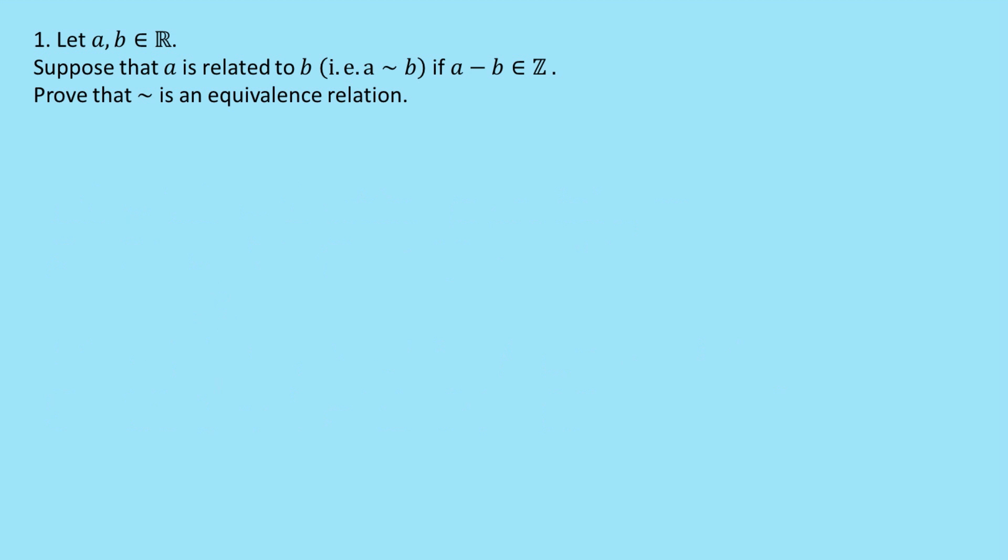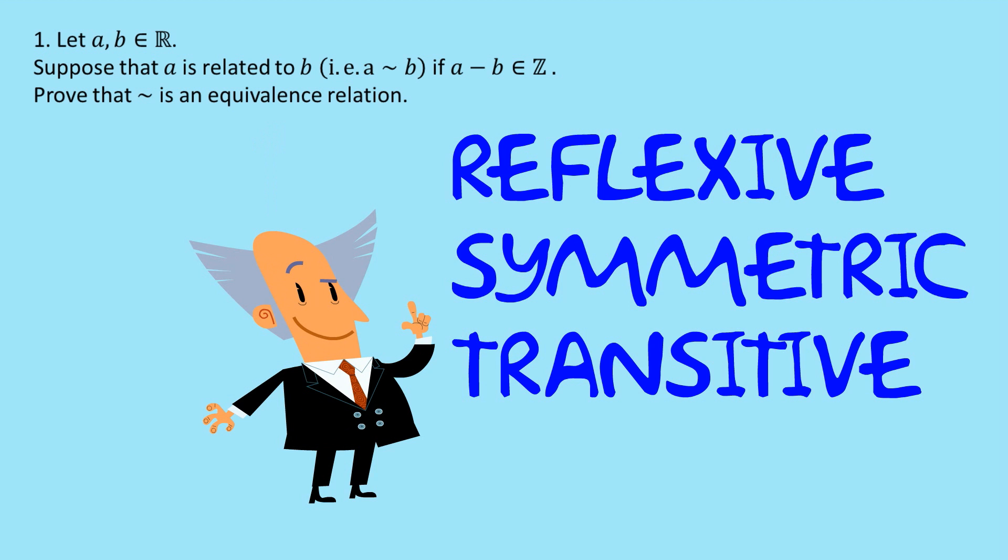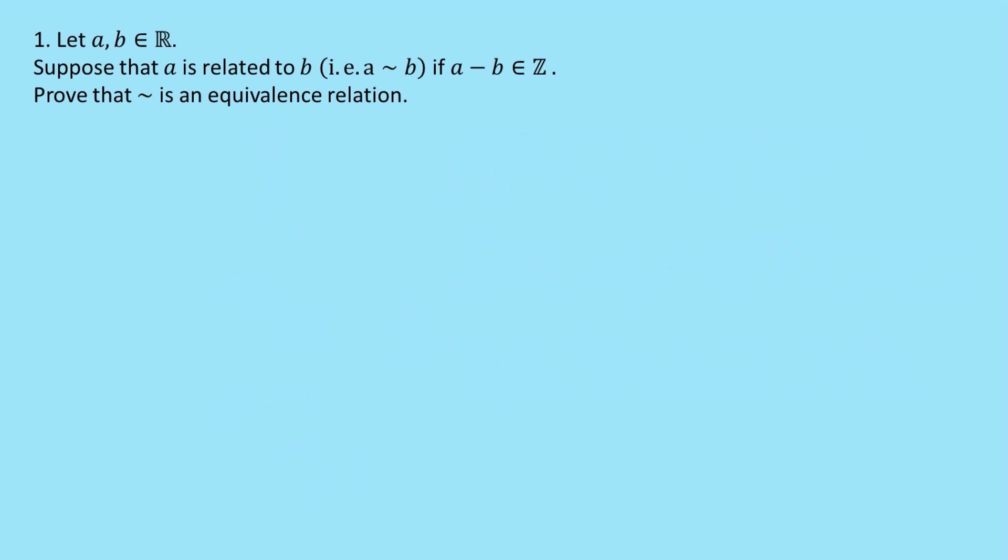The questions that were asked are, are things equivalence relations? So how do we show equivalence relations? We have to show that a relation has three attributes. It has to be reflexive, it has to be symmetric, and it has to be transitive. So let's work through the first question, and we will go through those three steps.